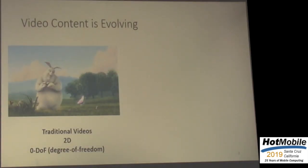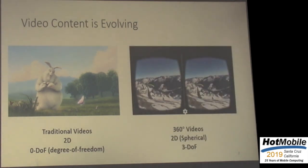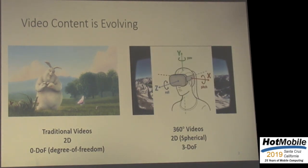So we all love watching videos, but the video content we have been watching has been evolving. For a long time, people watched traditional videos — obviously two-dimensional — and users have no control over what to watch. More recently, 360-degree panoramic videos have been becoming increasingly popular. It's still two-dimensional, but the content is wrapped onto a sphere. In this case, the viewer has three degrees of freedom: she can control the roll, pitch, and yaw when the video is being played back.